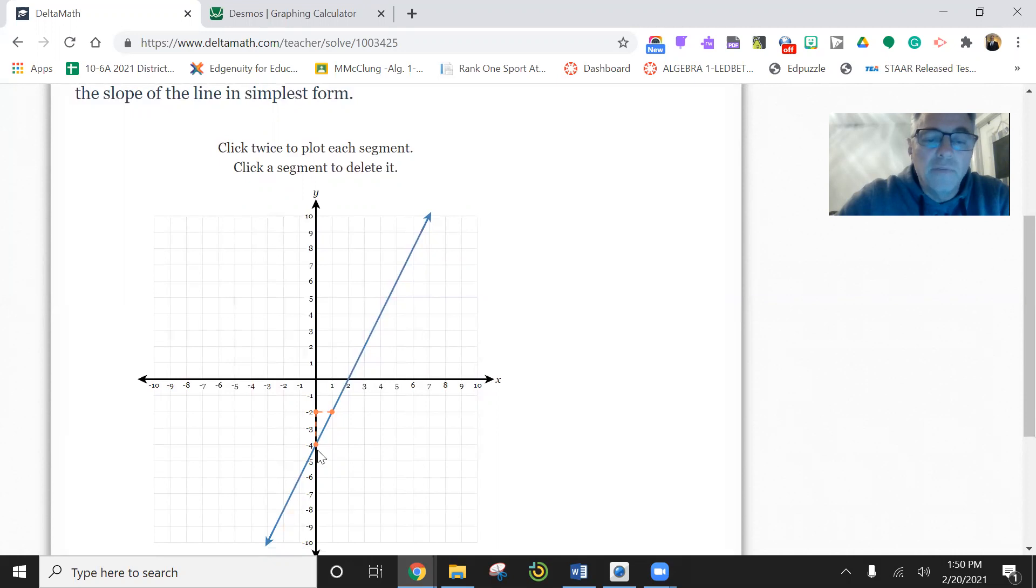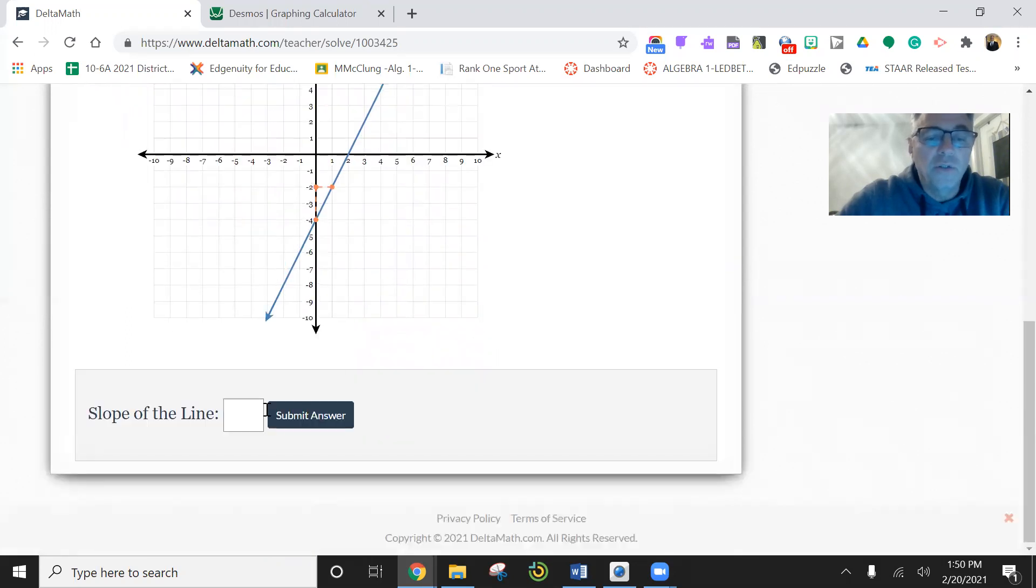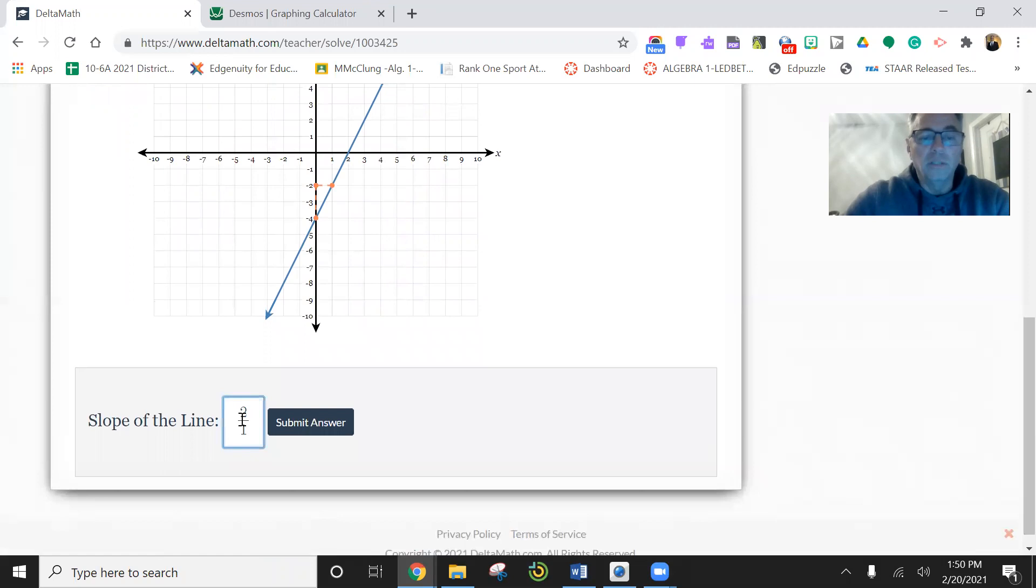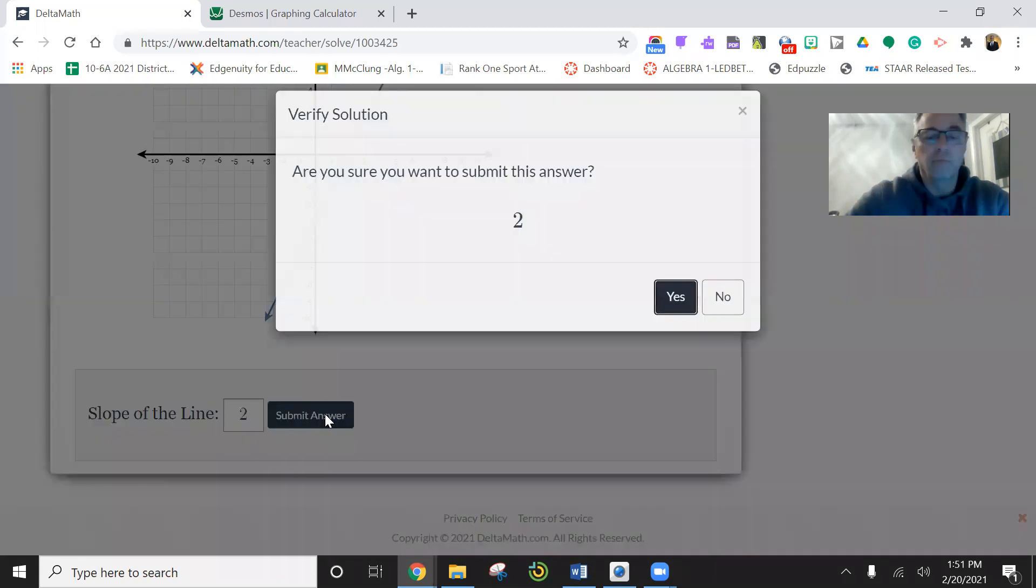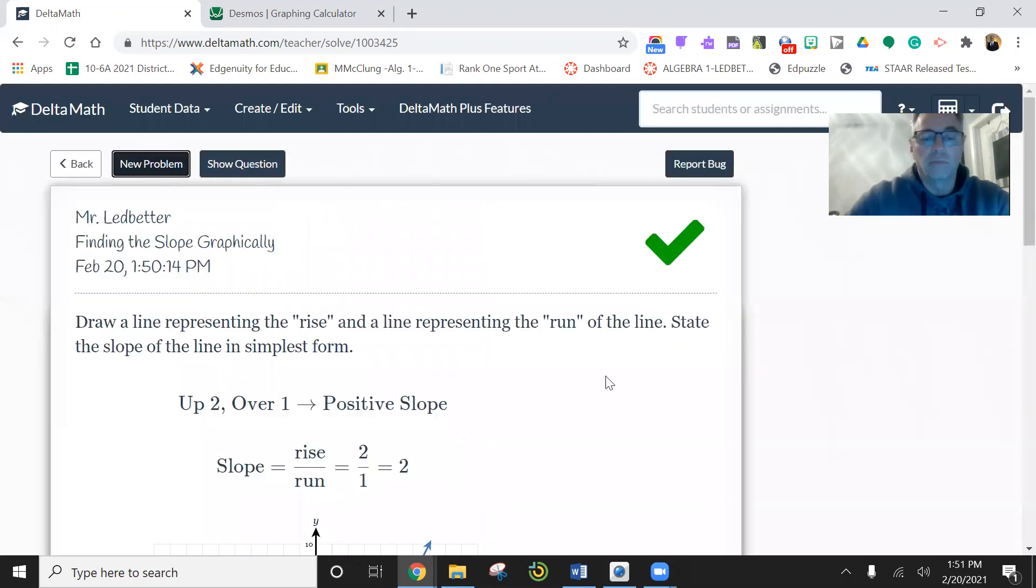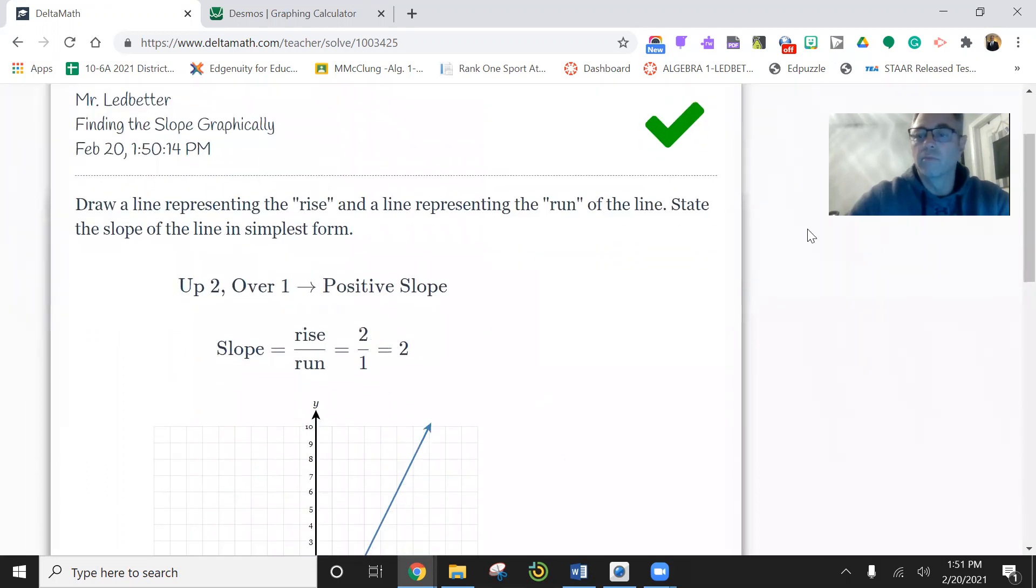And so now I figure out my rise is two to one. So my slope is two. It's like two over one. See, look up two, over one. And what's two over one? Well, hopefully you'd say it's two. Let's try another one.